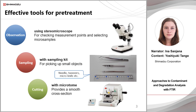This slide introduces effective tools for checking the condition of contaminants and collecting them for FTIR measurement. With a stereomicroscope or magnifying glass, it is possible to check measurement points in more detail and to select microsamples. A sampling kit, including tools such as tweezers or a micro-knife, helps handle very small objects. A microtome is particularly useful for getting a smooth cross-section.